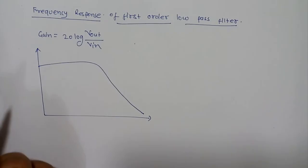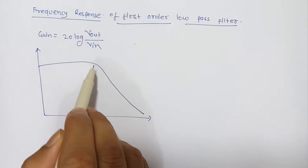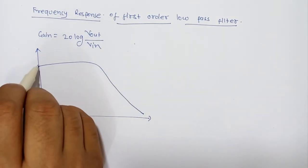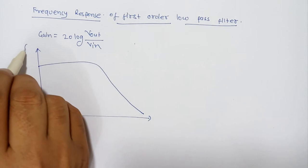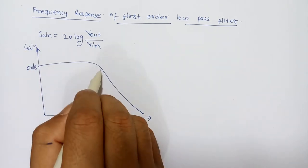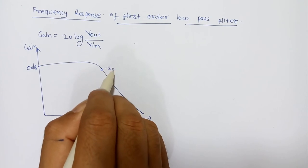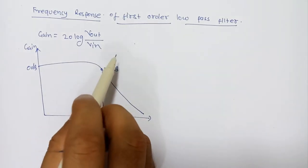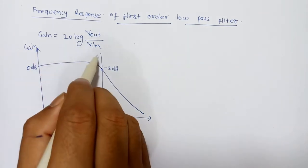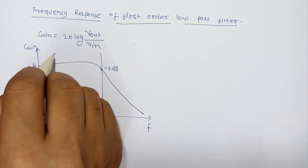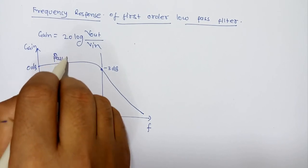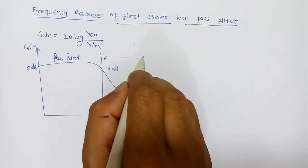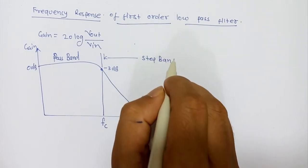Non-ideal filters - of course we cannot implement the ideal filter. There will be a smooth transition. It is a passive low pass filter, so here the gain will be 0 dB and this one will be the -3 dB cutoff frequency Fc. Before Fc this will be known as passband and after Fc this frequency region will be known as stopband.